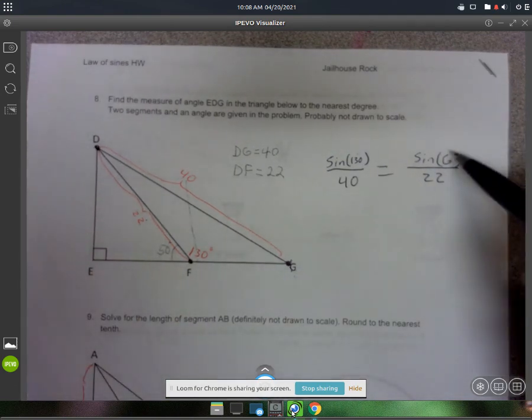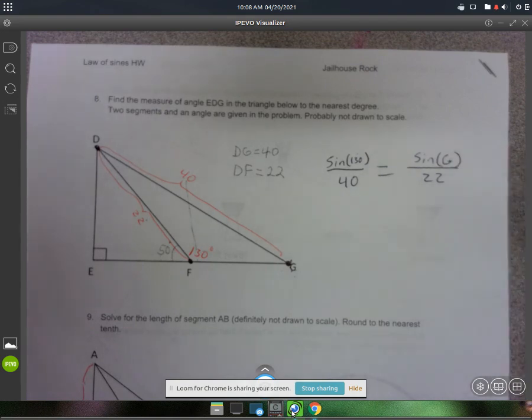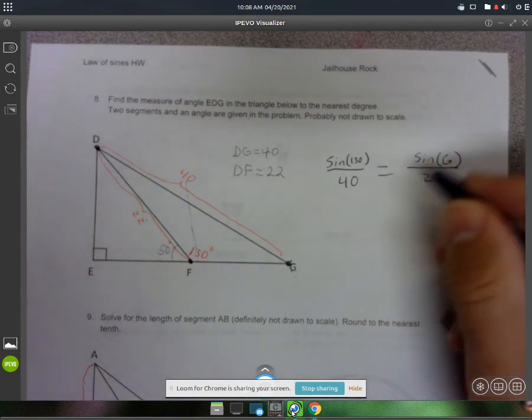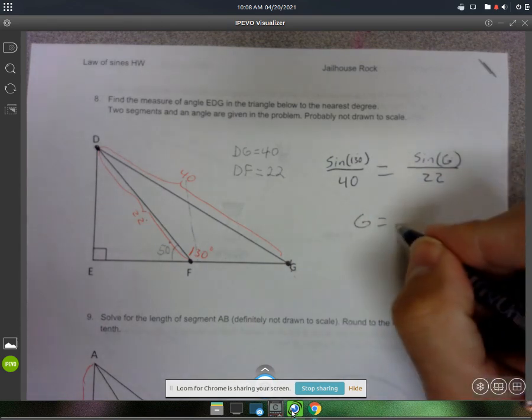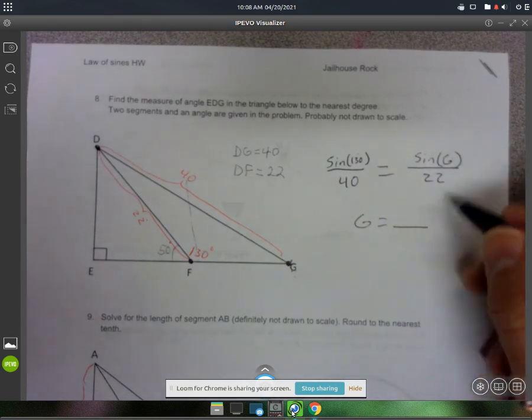All right, so once you have angle G solved for, you'll use inverse sine and all that stuff. You're going to get G is equal to some actual number. You know, you'll figure that out.